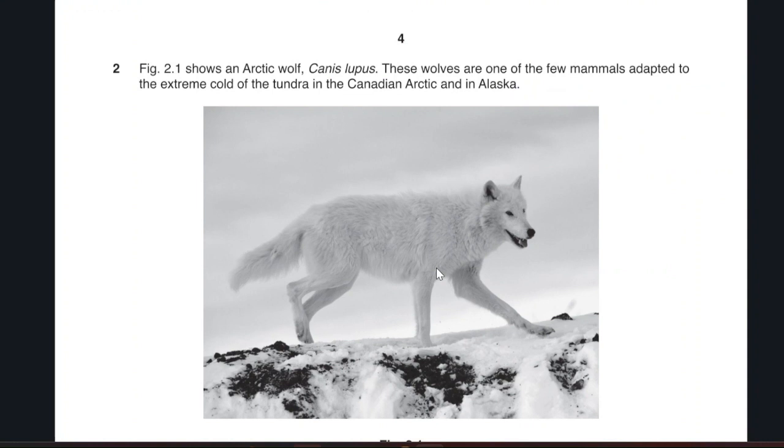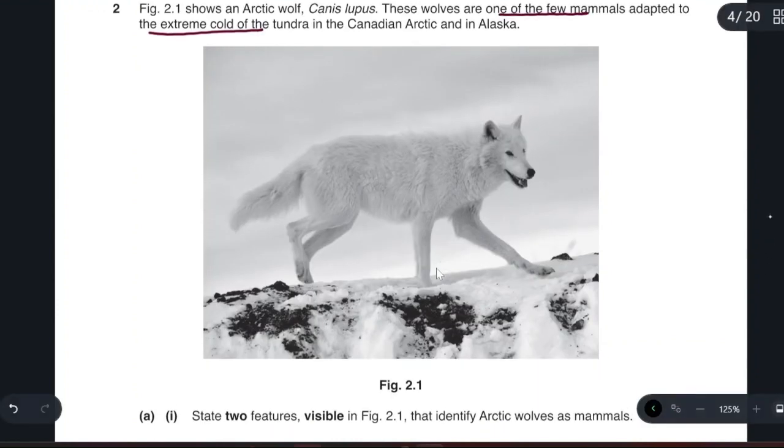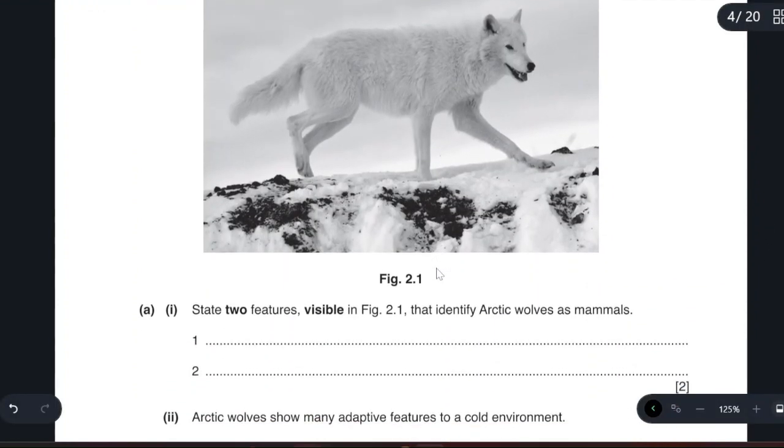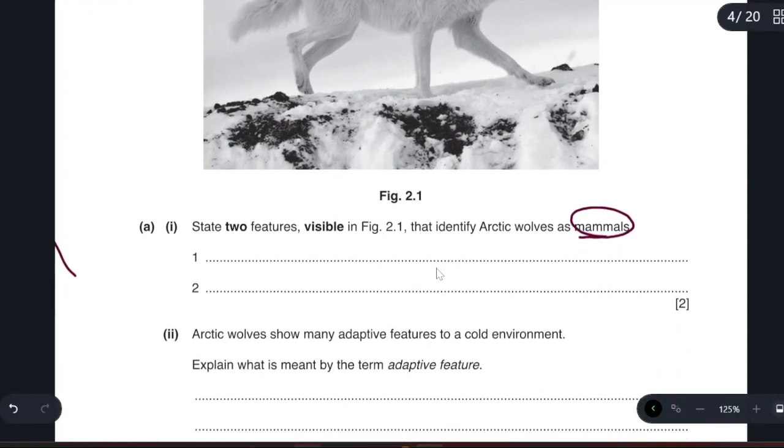Question 2, figure 2.1 shows the arctic wolf, Canis lupus. These wolves are one of the few mammals adapted to extreme cold. State two features that identify them as mammals. The features visible that identify them as mammals is the presence of fur and external ears.